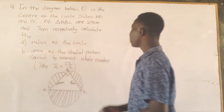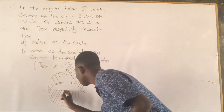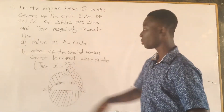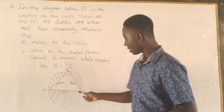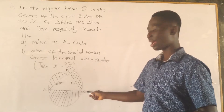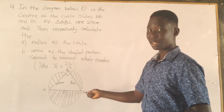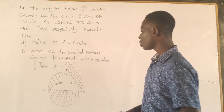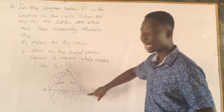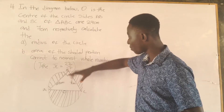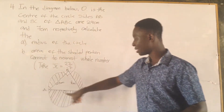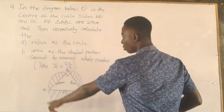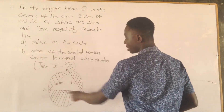So if O is the center of the circle, then AC is the diameter of the circle. And ABC is a triangle. So if ABC is a triangle, then we can solve for the length of AC, which is the diameter, using the Pythagorean theorem.